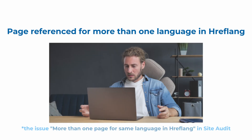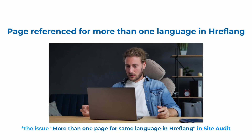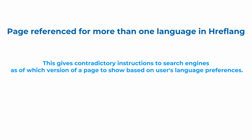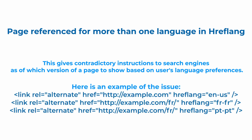This issue is similar to the one we talked about previously, but this gives contradictory instructions to the search engine as to which version of the page to show based on the user's language preferences. Here is an example of such an issue. As you can see, two languages point to the same page, which might confuse the search engine and the users.